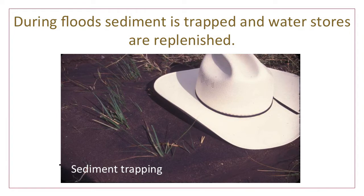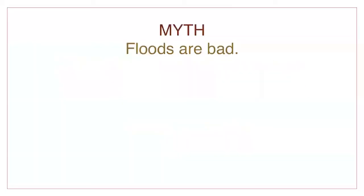When floodwaters come down the river, sediment gets trapped by riparian vegetation. This filters the water and the trapped sediment helps build up the stream banks and channels. Floodwaters also replenish the stores of water held in the banks. Floods are only bad if there is not enough space for water to spread out and slow down, and not enough vegetation to trap the flood mud on the banks. Once you know how important and inevitable flooding is, it's easy to understand why it's best to avoid building structures in the floodplain and to allow a river to take its natural course. Floods are where the good stuff happens. Myth debunked.